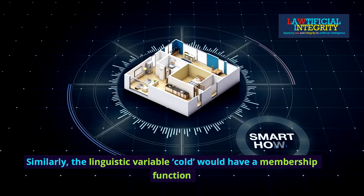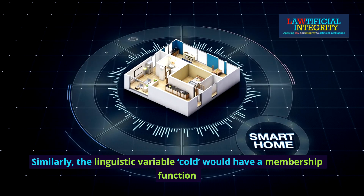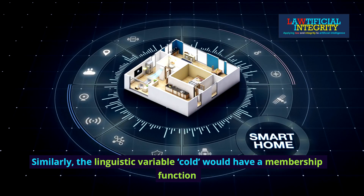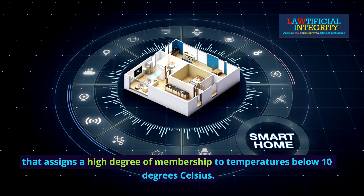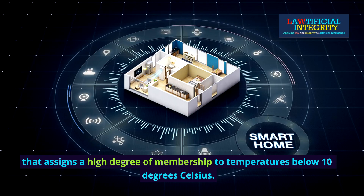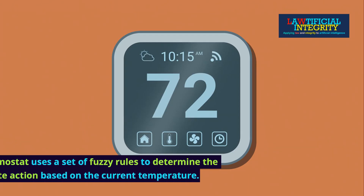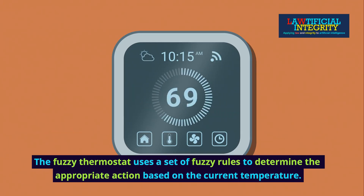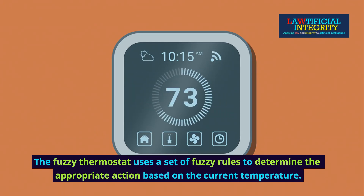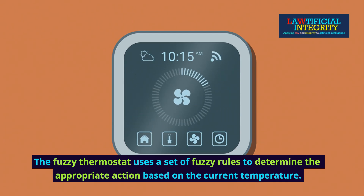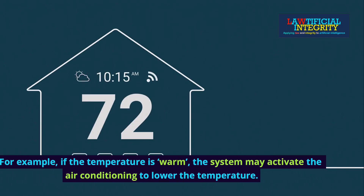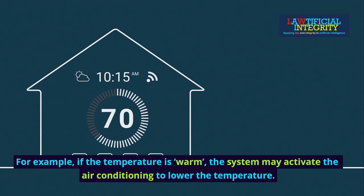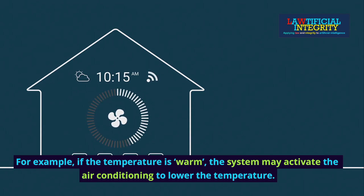Similarly, the linguistic variable 'cold' would have a membership function that assigns a high degree of membership to temperatures below 10 degrees Celsius. The fuzzy thermostat uses a set of fuzzy rules to determine the appropriate action based on the current temperature. For example, if the temperature is warm, the system may activate the air conditioning to lower the temperature.